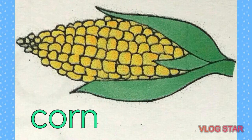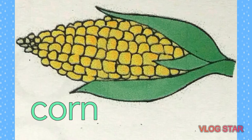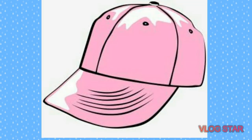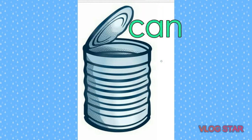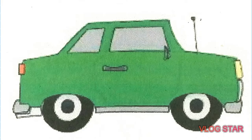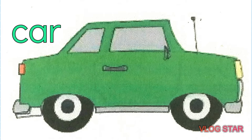Corn — hmm, my favorite. Corn is a tall cereal grass. Say corn. Cap — cap can block sunlight. Say cap. Can — a metal container that holds food or drinks, like sardines and milk. And car — car is a wheeled vehicle used for transportation. Say car.